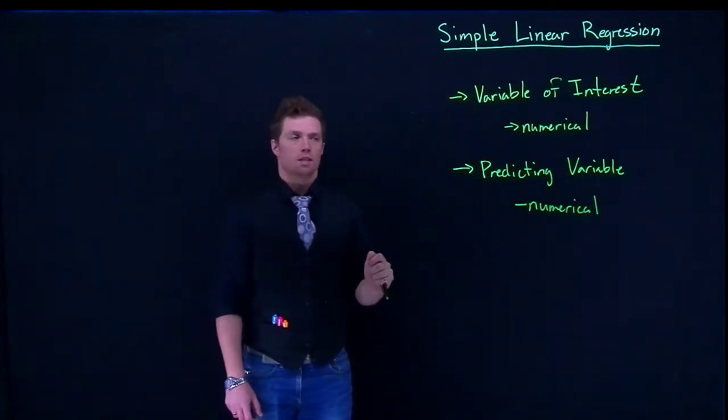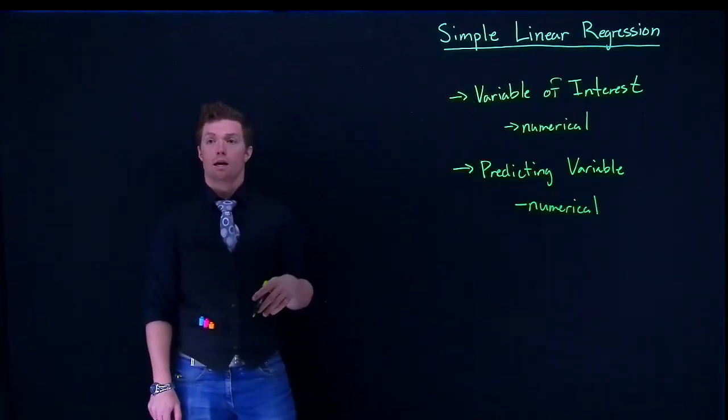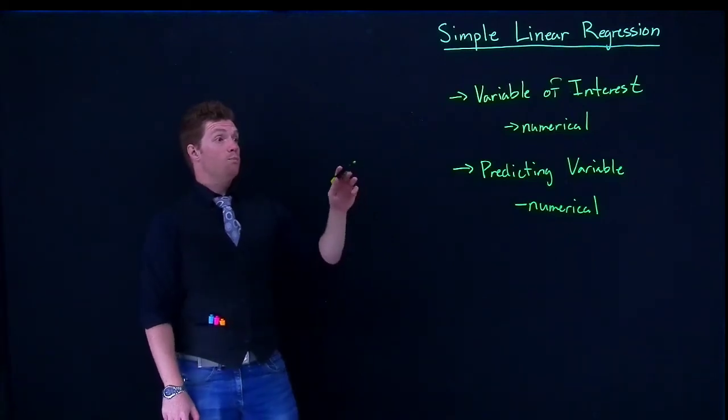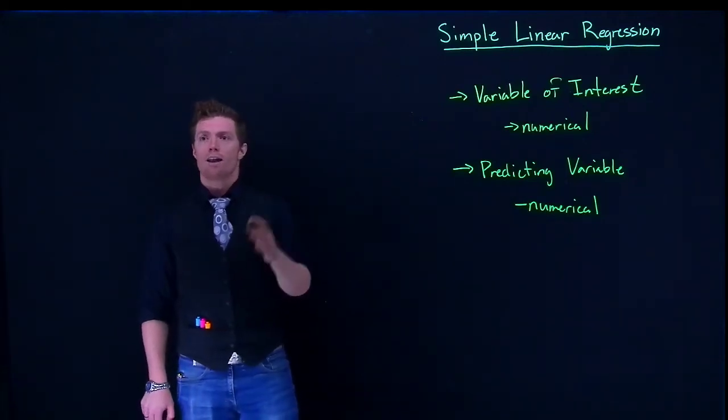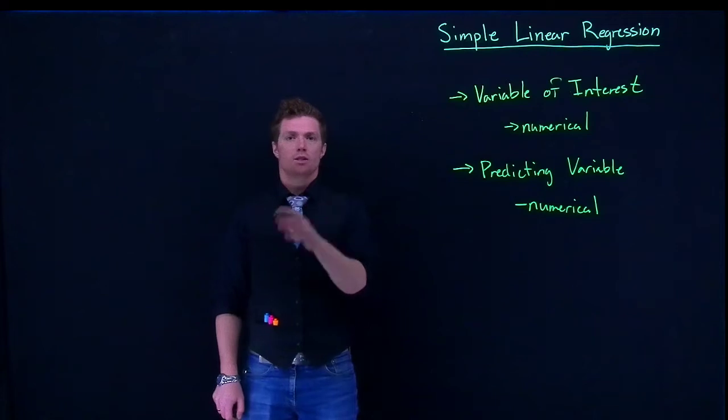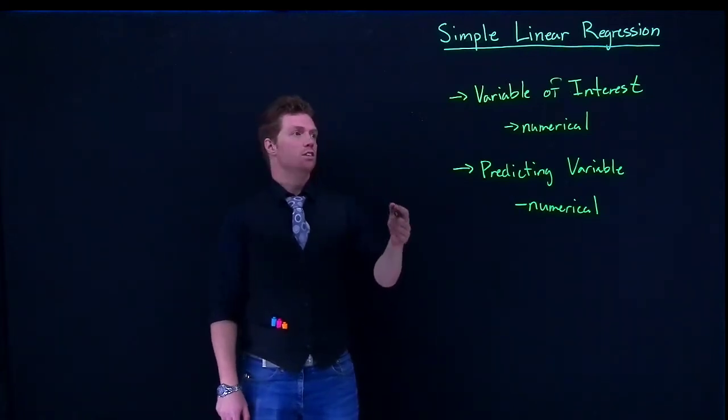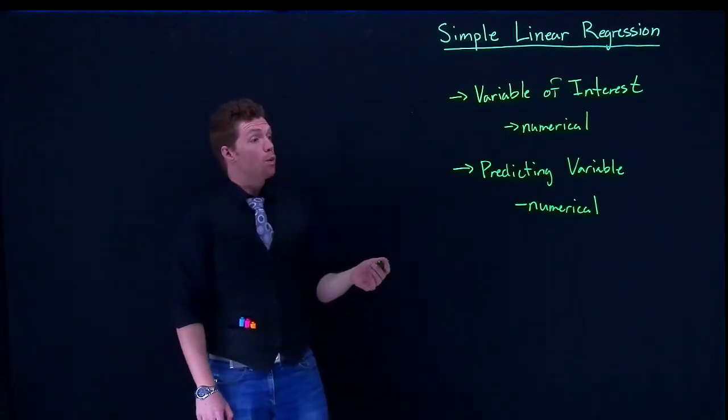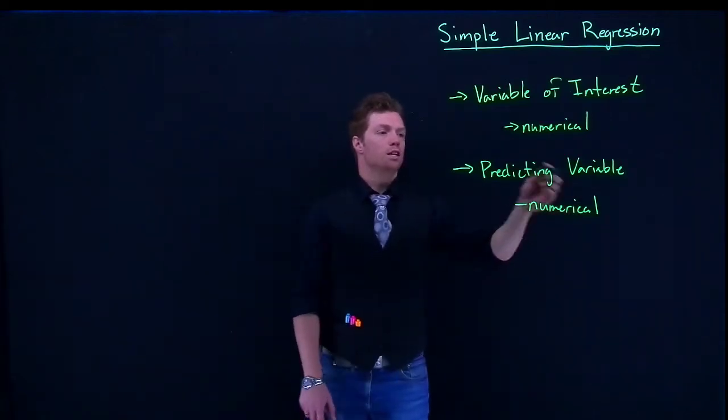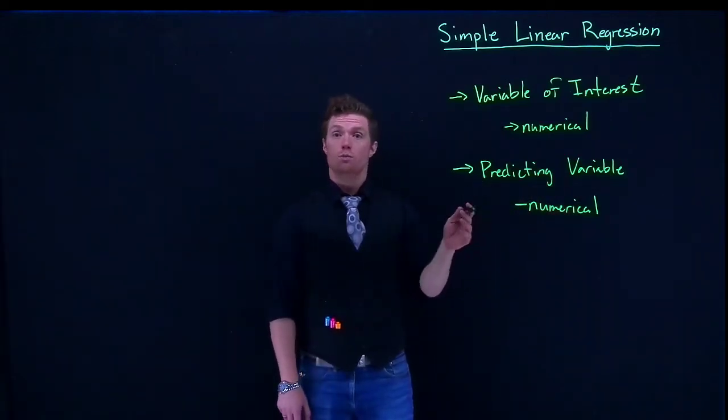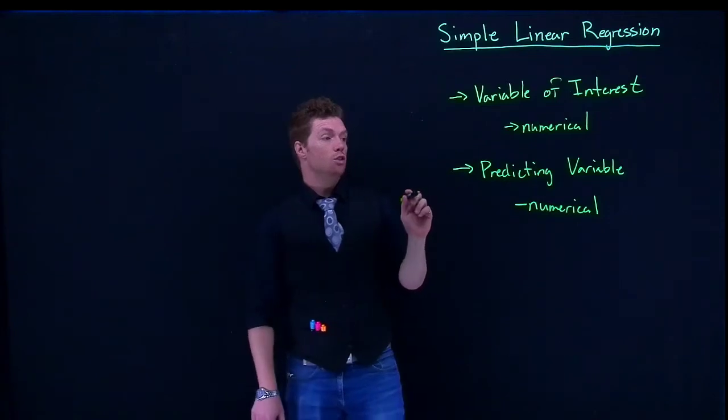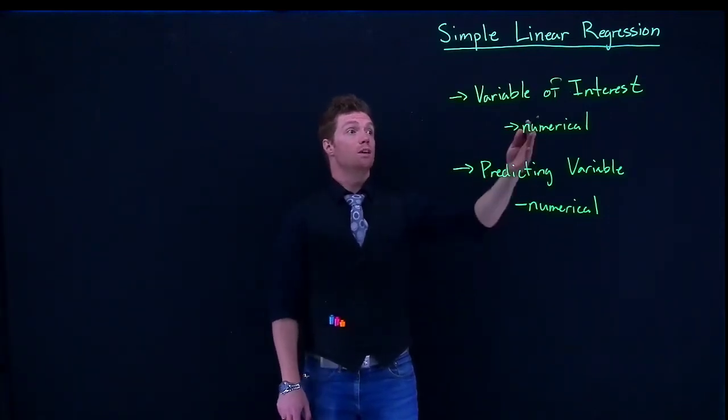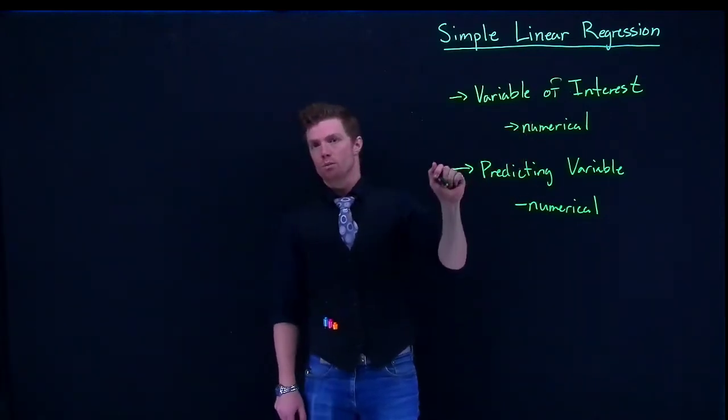Previously, when we were looking at ANOVA data, we were basically using a category to see if based upon different categories there were differences in our variable of interest. Now we're going to use a predicting variable that's also numerical and see if we can use this predicting variable to predict something about our variable of interest.